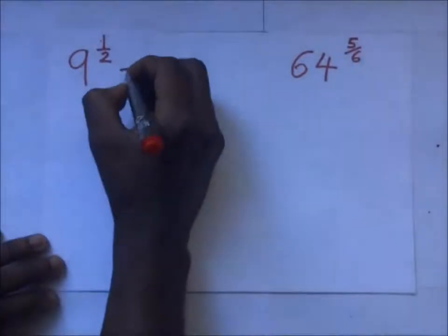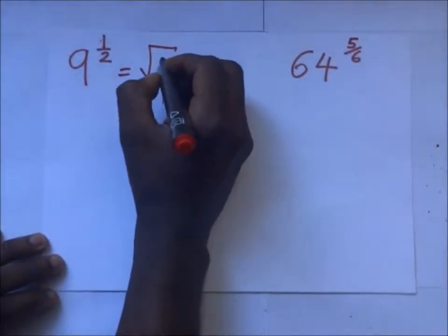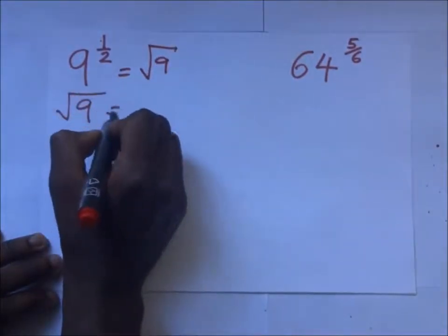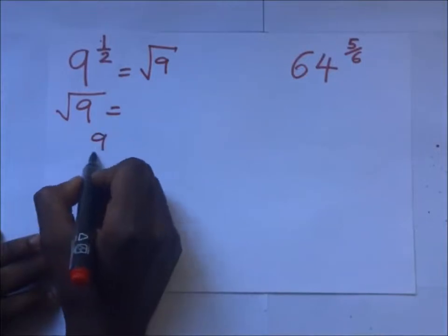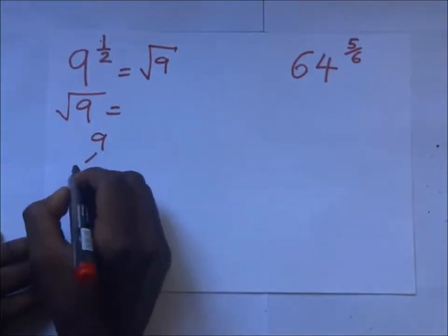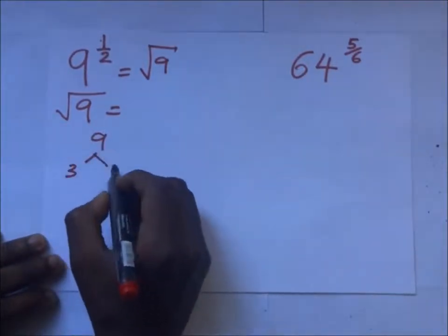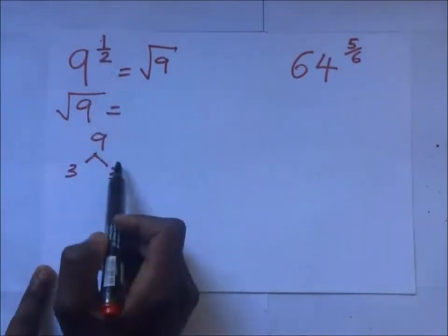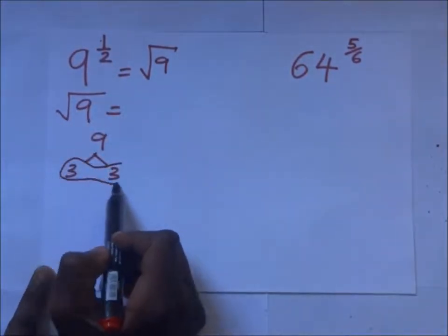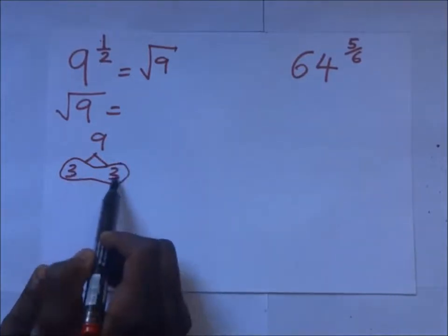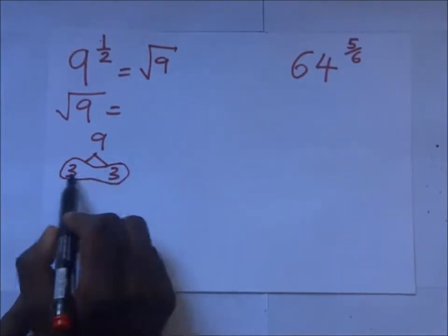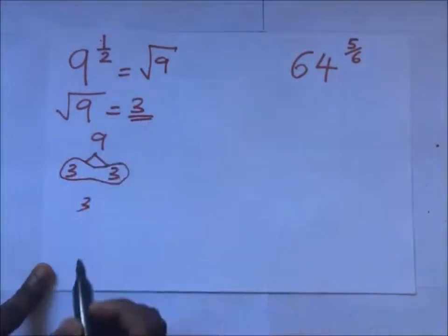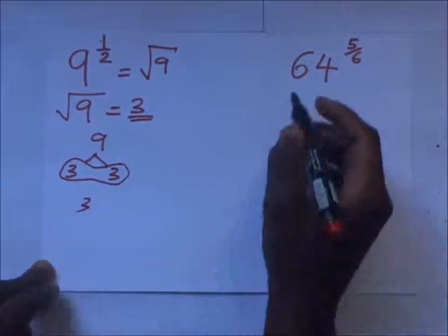9 to the power half, like we introduced in our previous video, is the same as the square root of 9. If you prime factorize 9 by 3, you have 3 times 3. Since it is a square root, you group these in groups of 2, and when you group them you choose one number from the group — 3 — so the answer is 3.